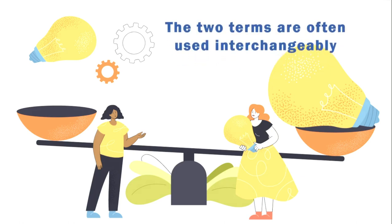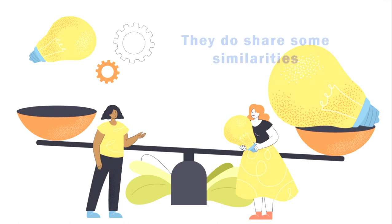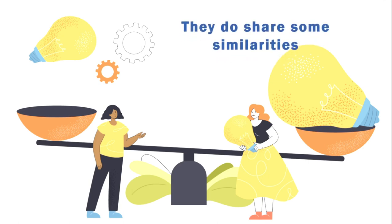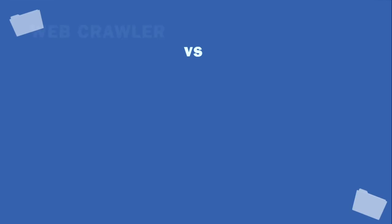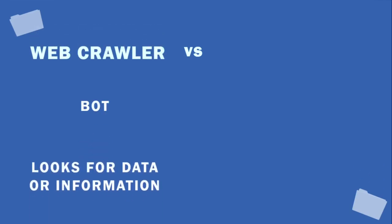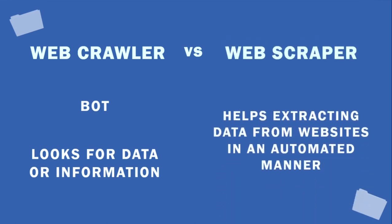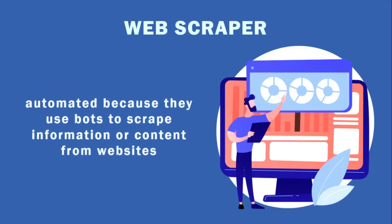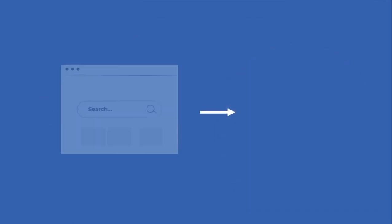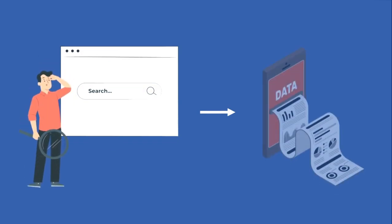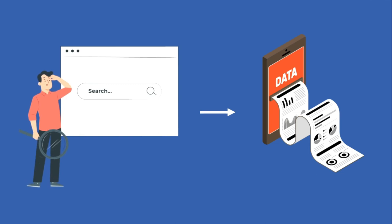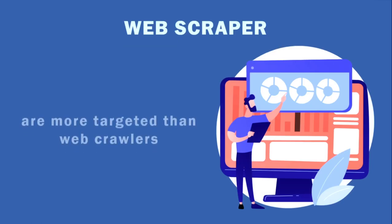Web crawlers are often compared to web scrapers and the two terms are often used interchangeably. While they do share some similarities, there are key differences. As discussed, a web crawler is a bot that looks for data or information. However, a web scraper basically helps extract data from websites in an automated manner. Web scrapers are automated because they use bots to scrape information or content from websites, and involve identifying, locating, and then extracting data.